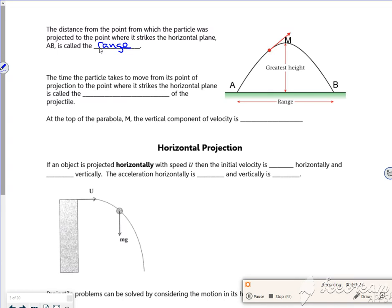So the time the particle takes to move from its point of projection to where it strikes a horizontal plane, so that from starting to landing, you've got the range going across, the time it takes is its flight time.